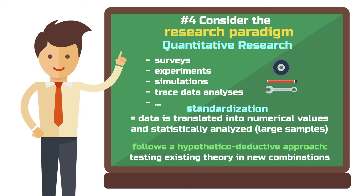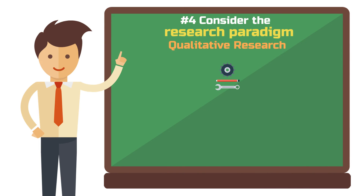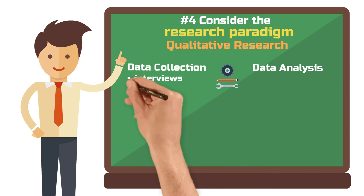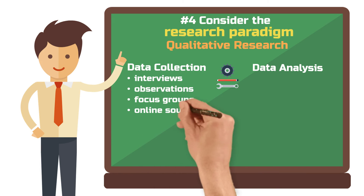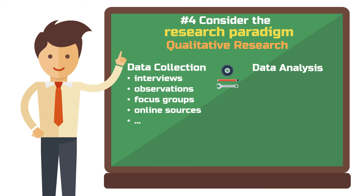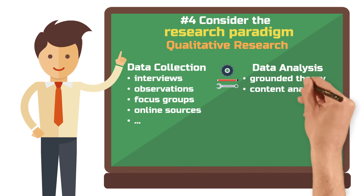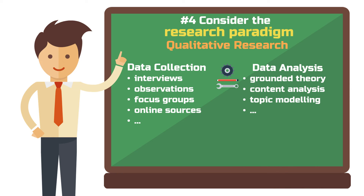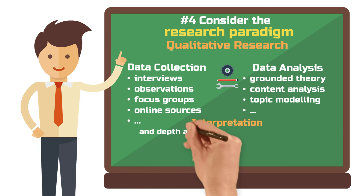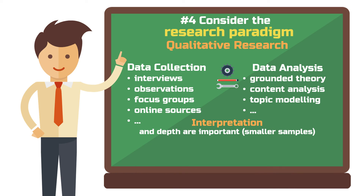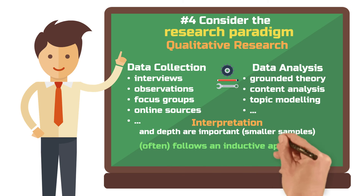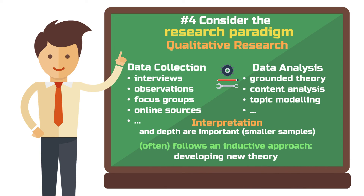For qualitative methods, it makes sense to distinguish between data collection methods and data analysis methods. In terms of data collection, interviews with experts, focus groups or other individuals and observations are the most prominent ones. You could also collect data from online sources such as social media or a city archive. To analyze qualitative data, you can use grounded theory techniques, content analyses or more computational methods such as topic modeling. For most qualitative methods, interpretation and depth of investigation play a significant role, so you tend to examine smaller samples. This often follows an inductive approach, meaning you develop new theory from the ground up rather than testing existing theory in new combinations.